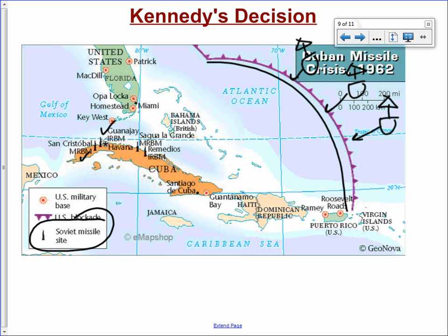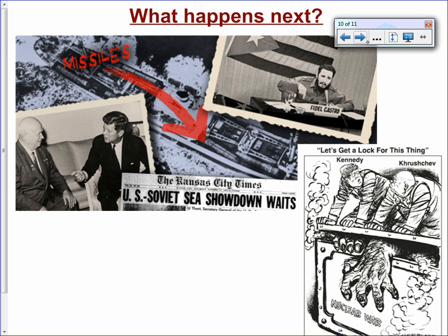Soviet ships were still heading full steam toward Cuba with nuclear missiles, and missile sites already set up included both MRBMs and IRBMs — the IRBMs capable of hitting any major U.S. city except Seattle or Portland. A famous cartoon shows Khrushchev and Kennedy arm wrestling while nuclear war tries to break free between them. The question of what happens next — as those ships approach and the U.S. has threatened force — will be the focus of class.